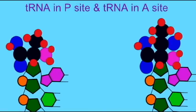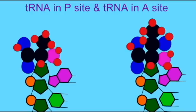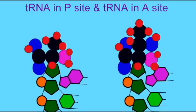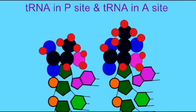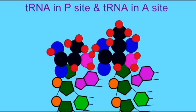This animation represents a close-up of the amino acids attached to tRNAs interacting in a ribosome. The first amino acid is in the P site as is its tRNA. The second amino acid and its tRNA are in the A site.